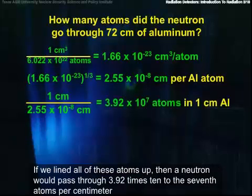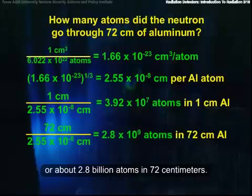If we lined all these atoms up, then a neutron would pass through 3.92 times 10 to the 7th atoms per centimeter, or about 2.8 billion atoms in 72 centimeters.